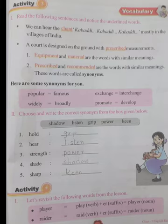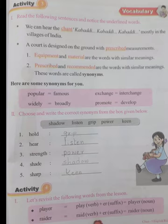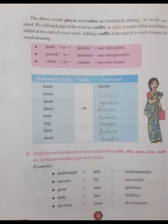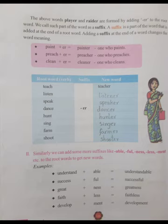Activity 4: Let's revisit the following words from the lesson. Player: play (verb) plus a suffix equals player (noun). Raider: raid (verb) plus a suffix equals raider (noun). The words player and raider are formed by adding a suffix to the root word. A suffix is a part of the word that is added at the end of a root word. Adding a suffix changes the word meaning. Examples: paint plus -er equals painter (one who paints), preach plus -er equals preacher (one who preaches), clean plus -er equals cleaner (one who cleans).